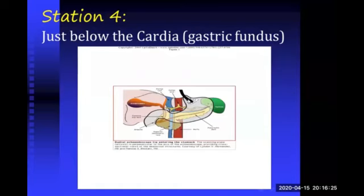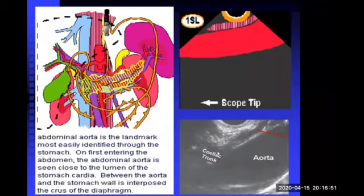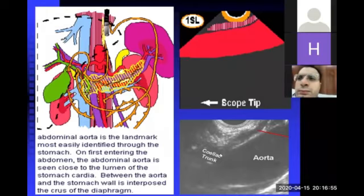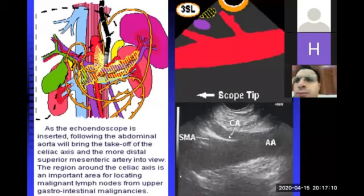The echoendoscope is located at the cardia to start station four. At the cardia, I search for the landmark: the abdominal aorta appearing as a longitudinal structure. The right crus of the diaphragm is identified as a fleshy part. The first big branch of the abdominal aorta is the celiac trunk. Pushing the echoendoscope downward, the celiac axis is seen with its branches: the left gastric going to the right of the screen and the splenic artery going to the left of the screen.